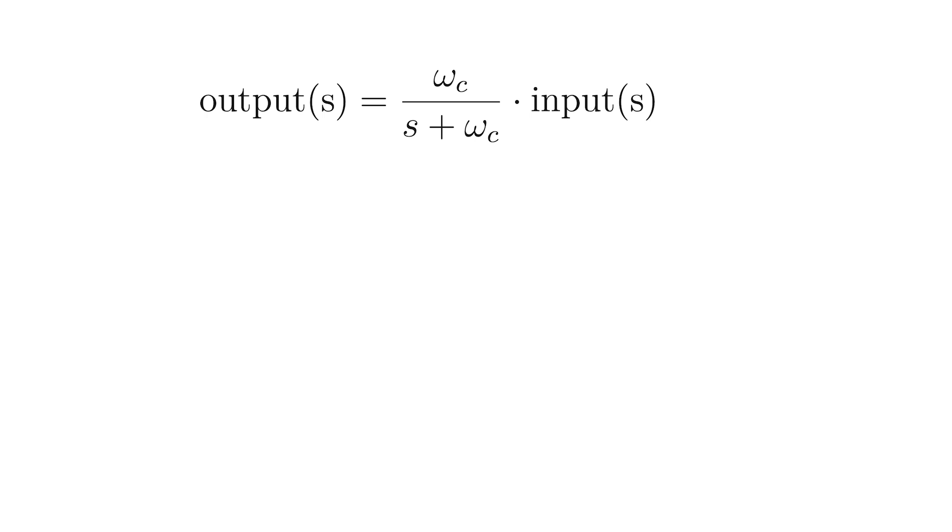The transfer function of a low-pass filter in the frequency domain is a first-order response as well, with the difference that tau is equal to 1 divided by omega c, which can be transformed to the equation seen on screen.